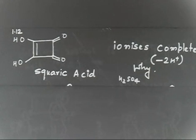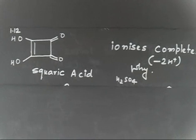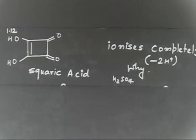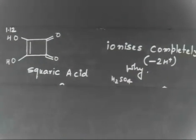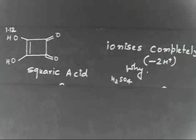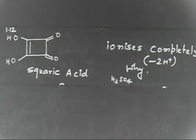So you will write 5 resonating structures in total. Among these 5 resonating structures, 4 will be equivalent and the 5th one will be aromatic. That is very, very stable — the 5th one is very stable because of aromaticity. The 4 will be equivalent. So let us write all 5 resonating structures of the dianion.